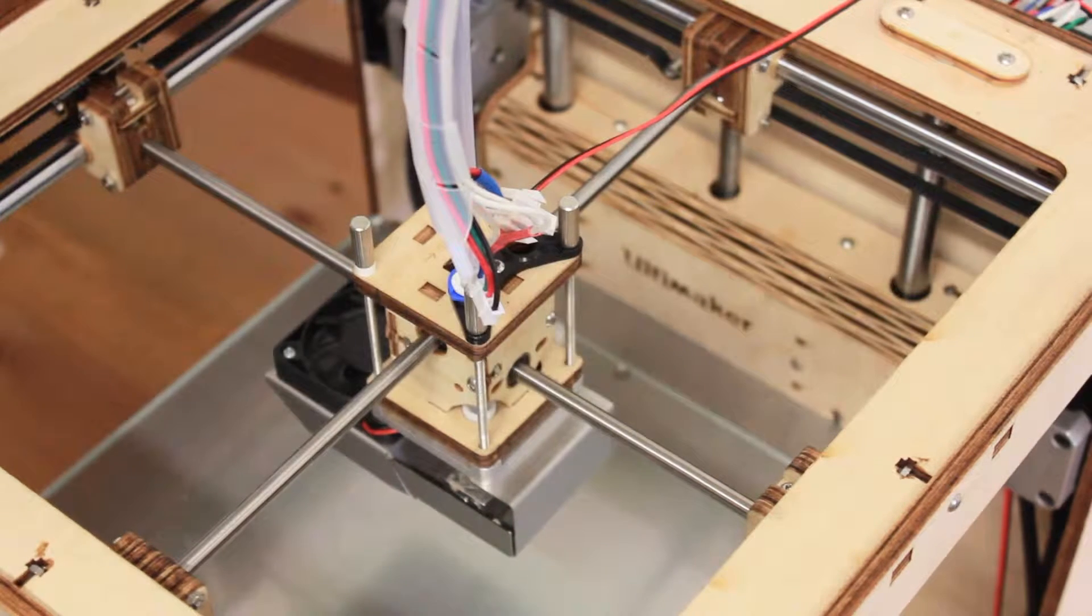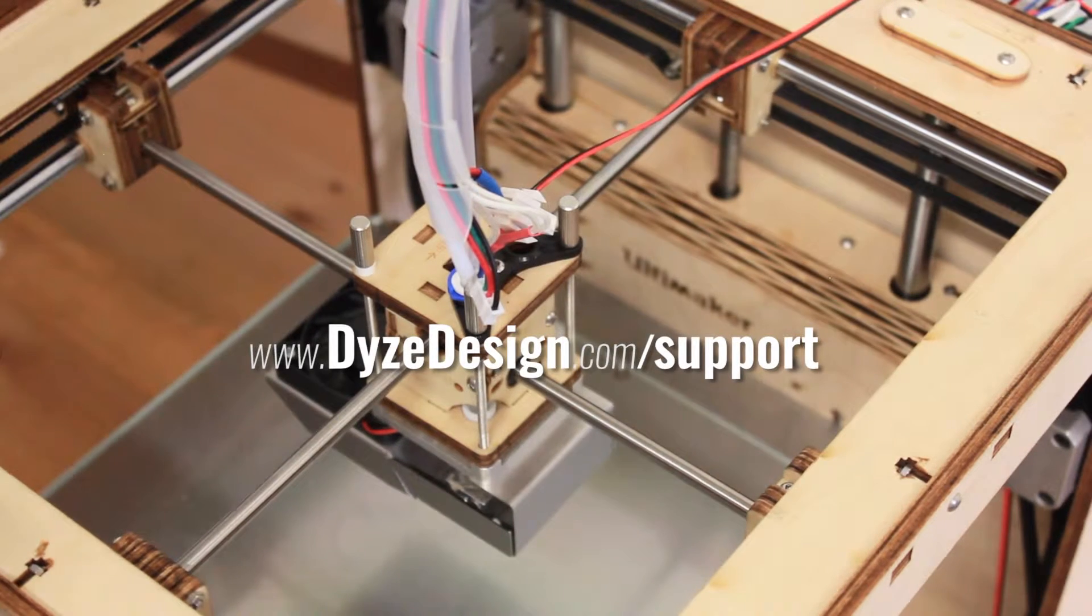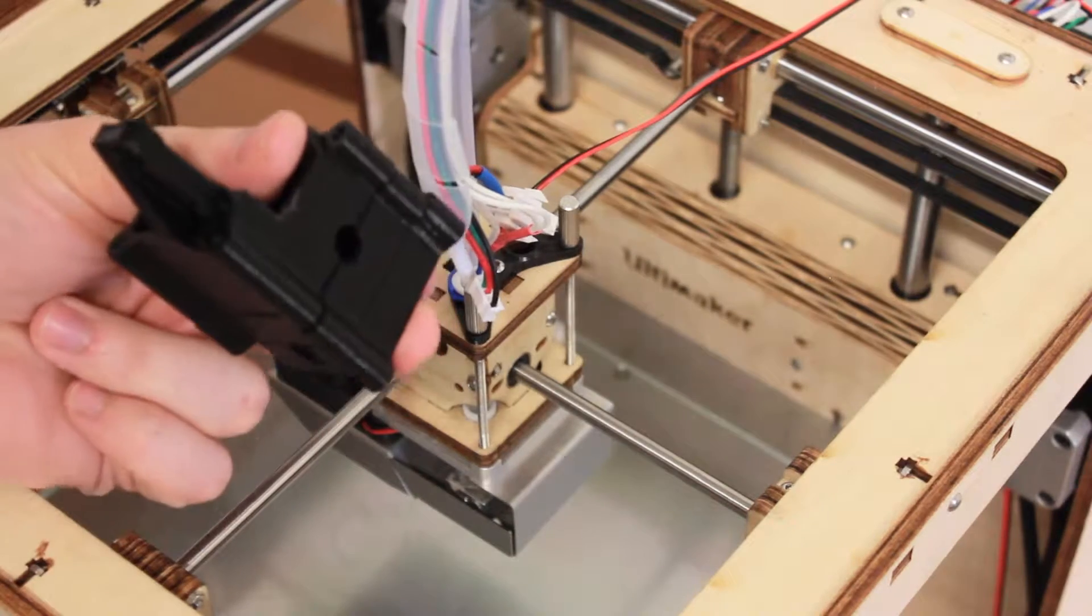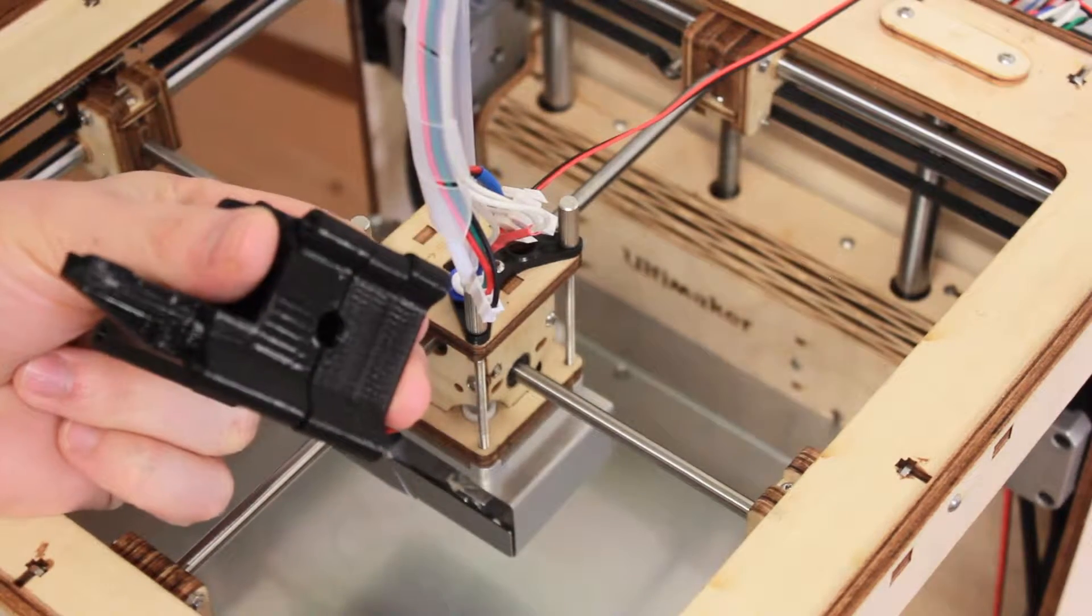First thing first, you want to go to www.dicedesign.com in the support section and download and print the three-part bracket made specially for the Ultimaker.